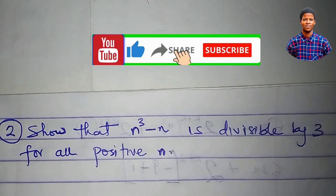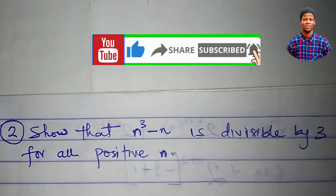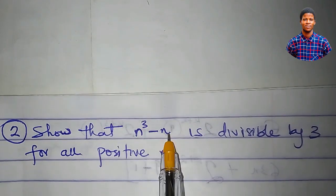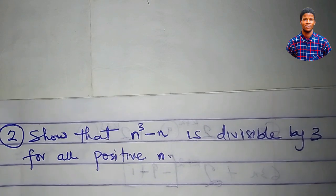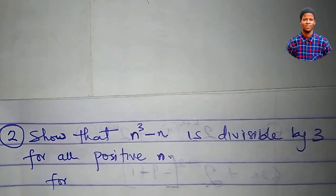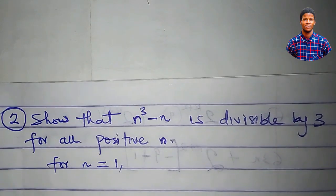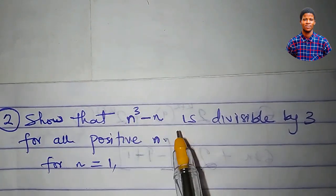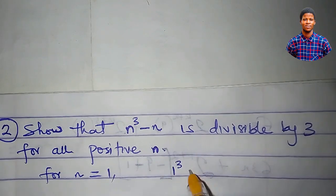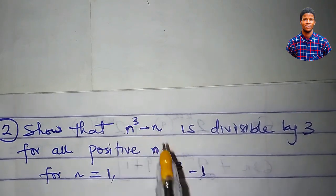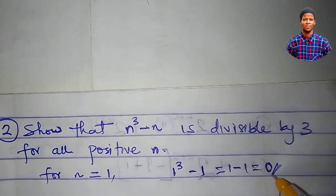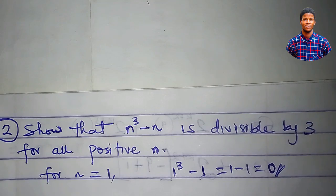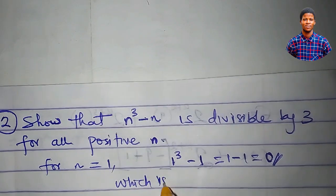Lastly, let us also prove by mathematical induction that n cubed minus n is divisible by 3 for all positive n. For n equal to 1, plugging in 1 gives us 1 cubed minus 1, which is 1 minus 1 equals 0. Zero is divisible by 3, since 0 divided by 3 is 0. So it is true for n equal to 1.